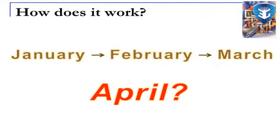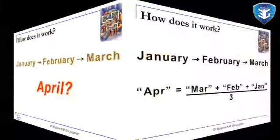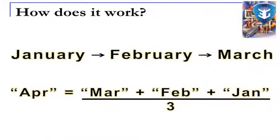Suppose we have sales figures for three months — January, February, and March — and we want to use these actual figures to forecast the figure for April. The forecast for April is calculated by taking the figures for March, February, and January and dividing by 3, since we are calculating a 3-month moving average. The formula uses the notation: F_T = (A_{T-1} + A_{T-2} + A_{T-3}) / 3, where F_T is the forecasted demand for the current period and A represents actual demand.